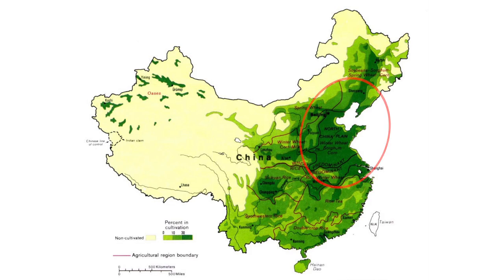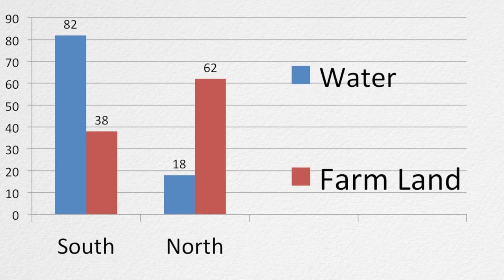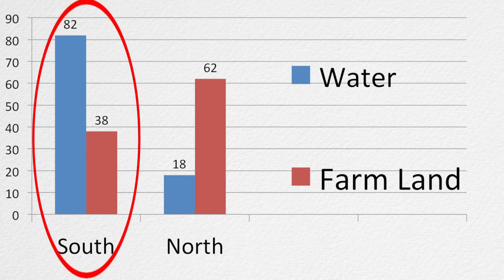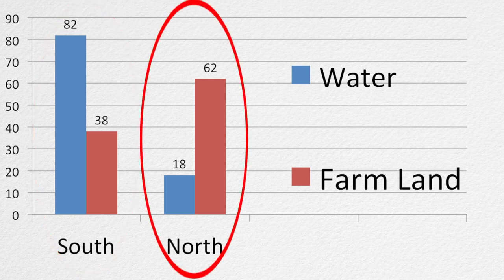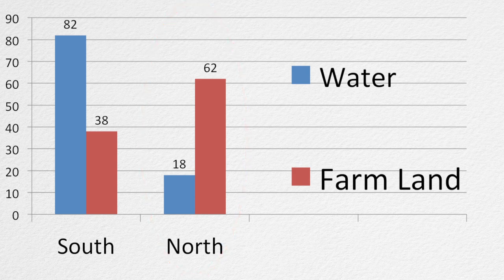As this graph indicates, the maldistribution of water and farmland is quite striking. South China has over 80% of all of the fresh water and less than 40% of the farmland, whereas North China has only 18% of the fresh water and nearly over 60% of the farmland. As a consequence, the problems of water distribution are different in North and South.